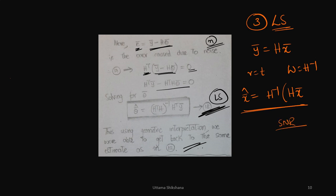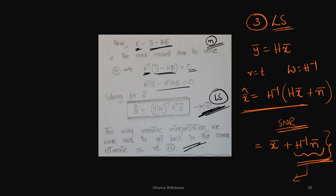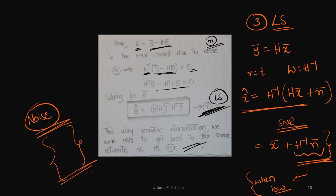However, the moment you add noise N-bar, the estimate becomes X-bar plus H-inverse times N-bar. The term H-inverse amplifies or enhances the noise. This is the key disadvantage of the zero forcing receiver: it enhances noise and is not an attractive solution at low SNR or when there is significant noise. The solution in that case is the MMSE equalizer, which we will discuss in the upcoming videos as a more optimal solution under the presence of noise.